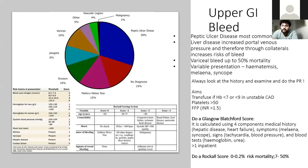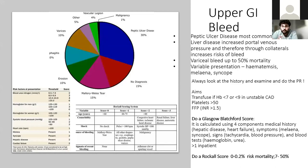In terms of upper GI bleed — this is very common, about 50,000 admissions per year. In terms of causes, peptic ulcer disease is the most common, making up about 30%. Other important causes to remember are Dieulafoy lesions — normal anatomical vascular variations — as well as Mallory-Weiss tears and NSAID use, which causes gastric irritation, ulceration, and bleeding.